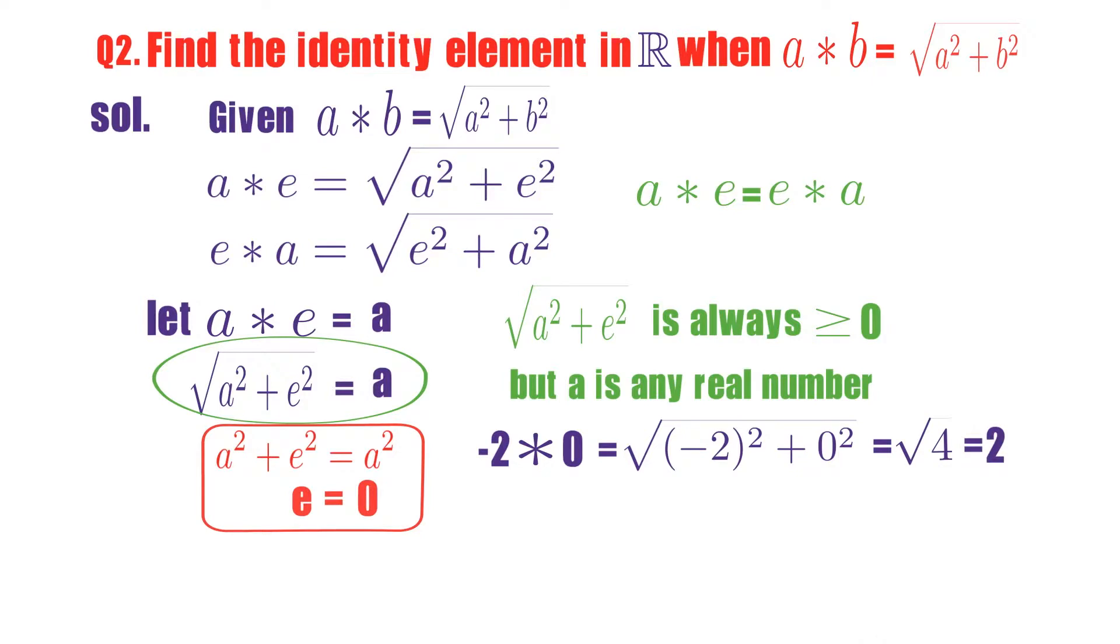Observe here carefully. Minus 2 star 0, we got 2. Actually, we should get minus 2 according to given information. That means a star e is not equals to a.